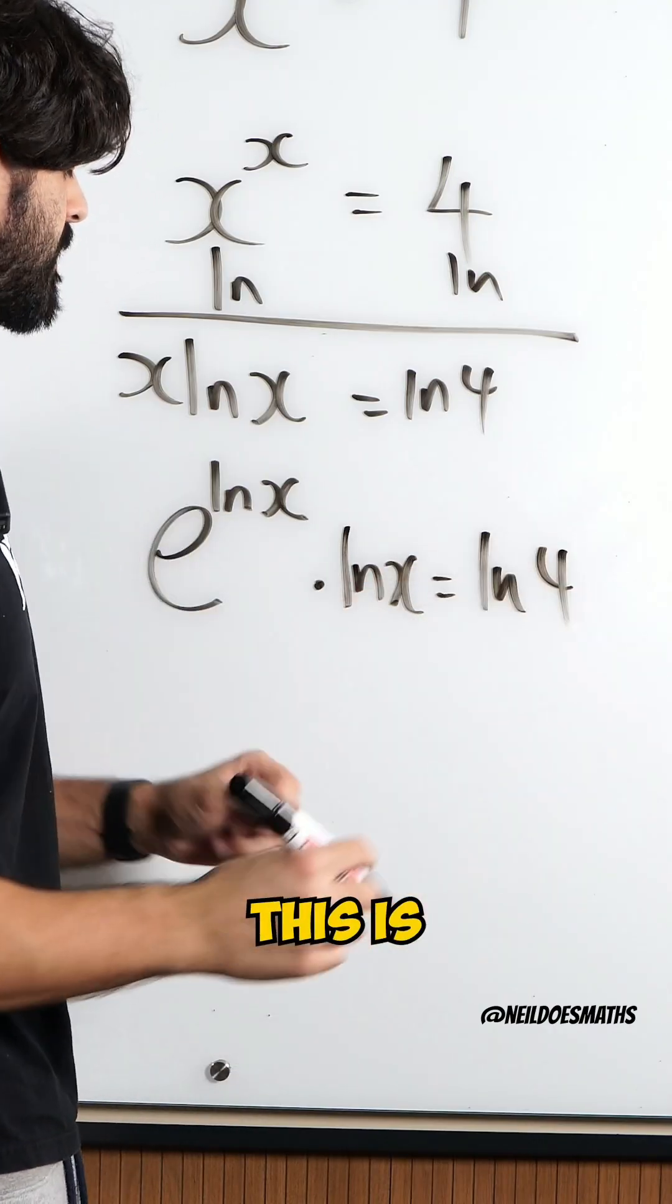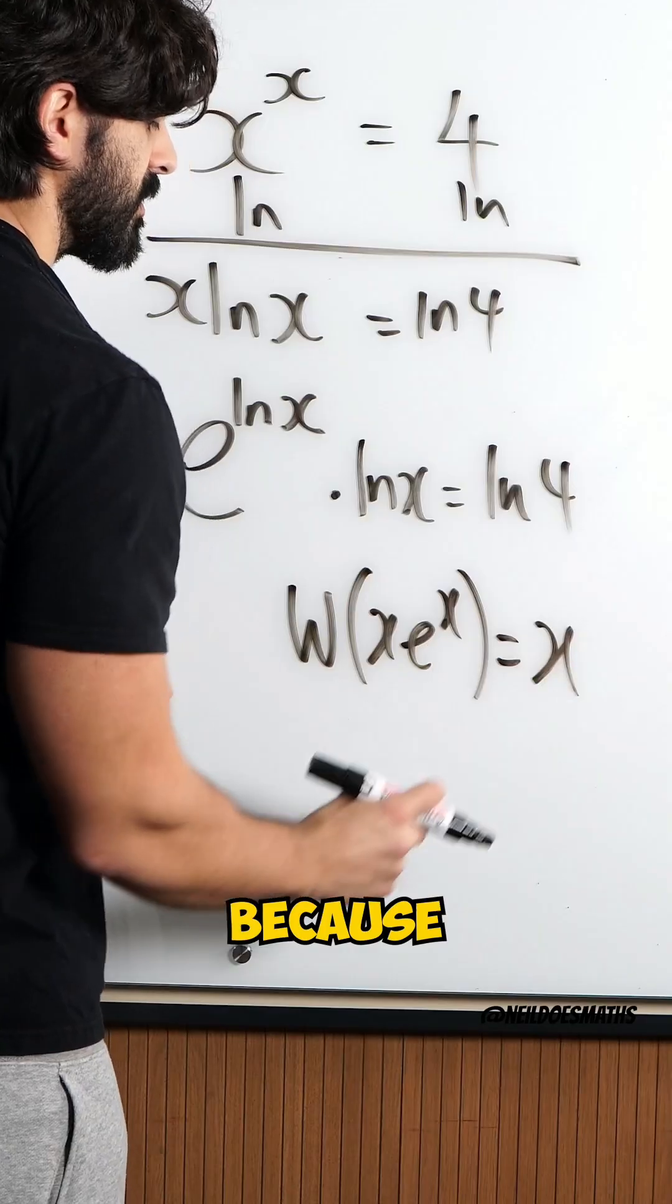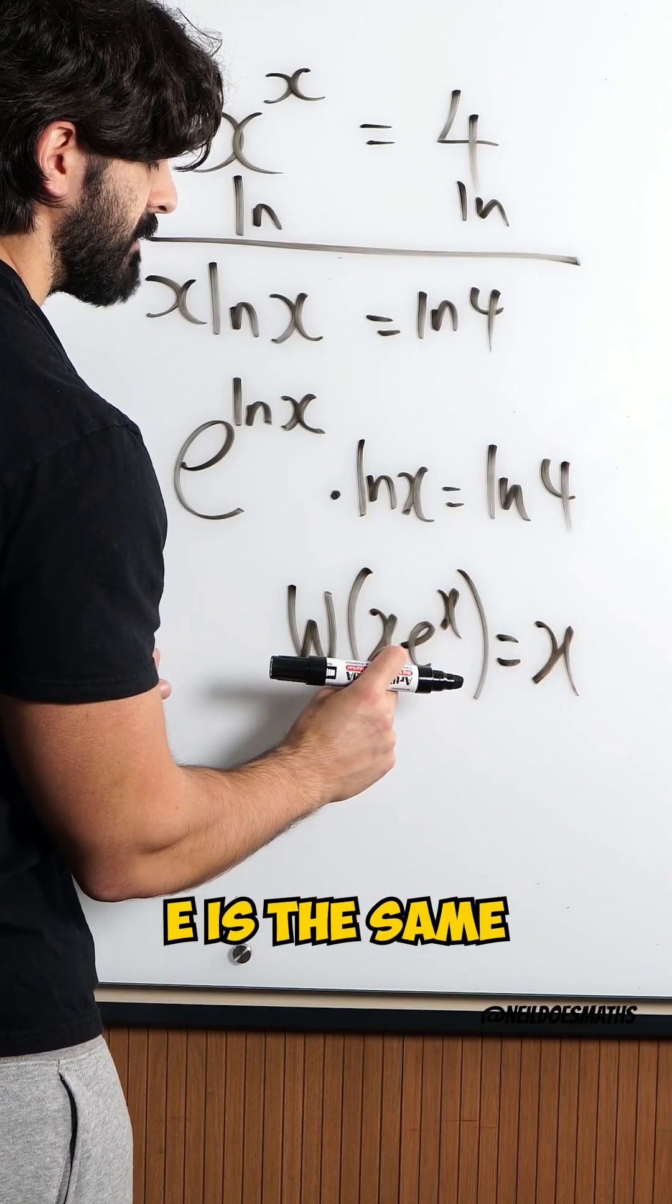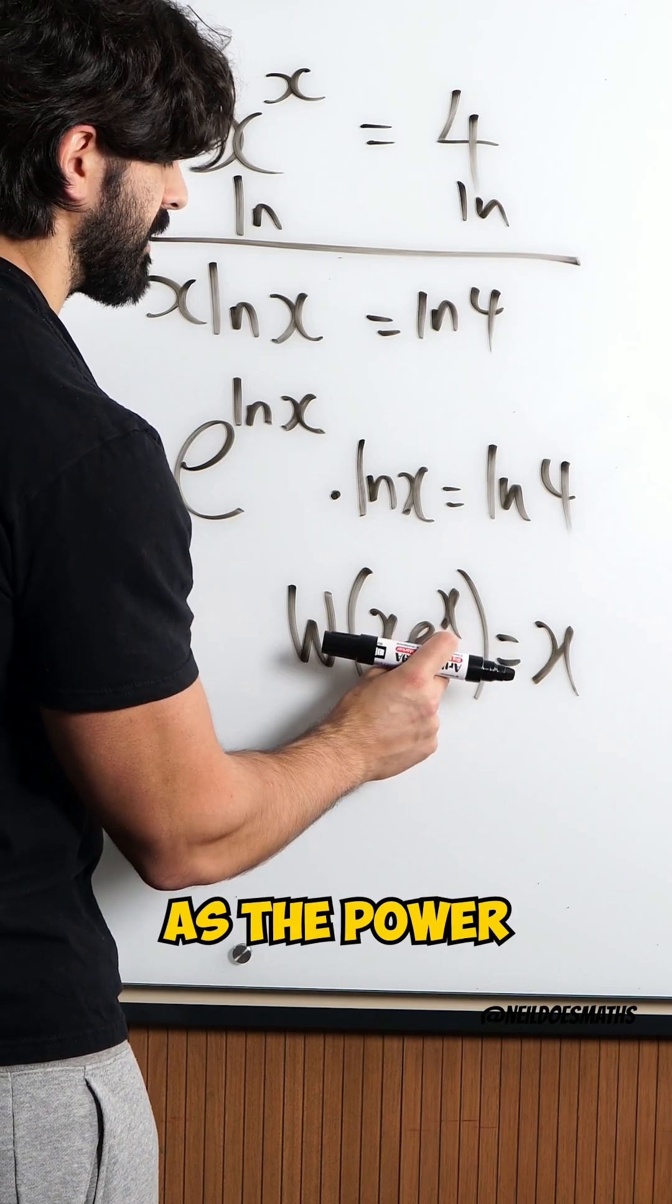Now this is in the form of my Lambert W function. Because if the power of e is the same as this we can do W to just rewrite it as the power.